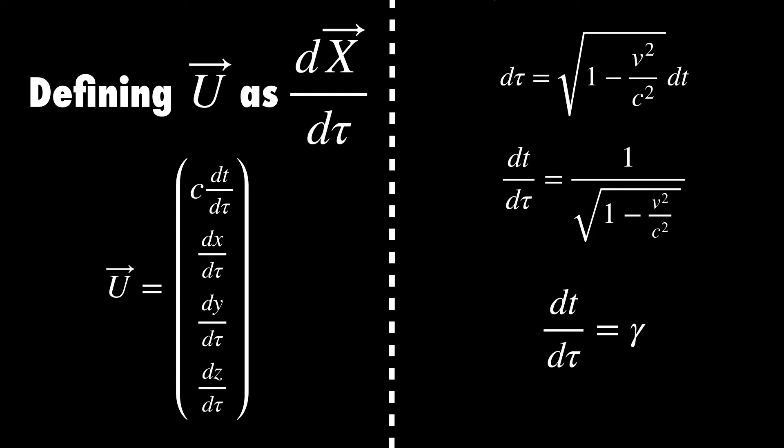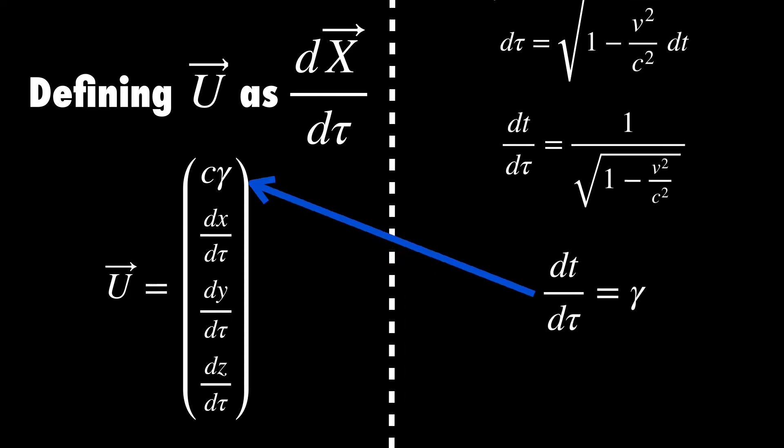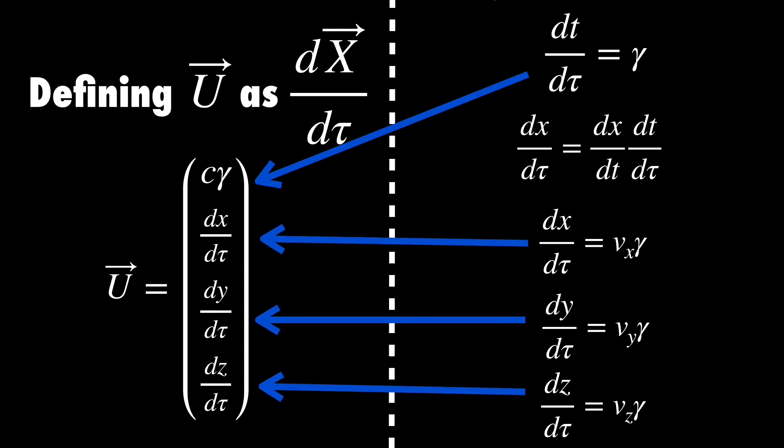With some light rearranging, dt by dτ is 1 over the square root of 1 minus v/c squared, which is just gamma. So yes, very weird that we're taking the time derivative with respect to another time, but the fact that we end up with a useful physical quantity is a good sign that we're going in the right direction. So we've got the first term of our new four-vector. But what about the rest? Consider the chain rule. dx by dτ is just dx by dt times dt by dτ, and dx by dt is just the normal x component of velocity we know and love, and dt by dτ is gamma, as we just found out.